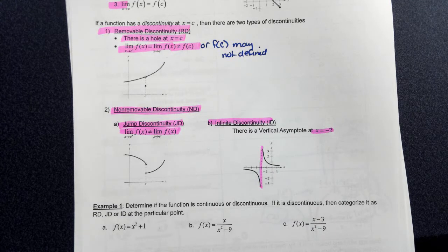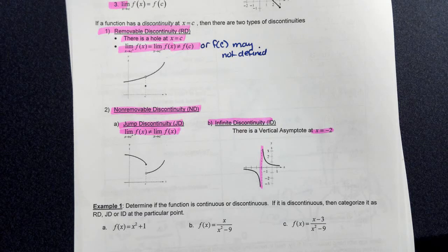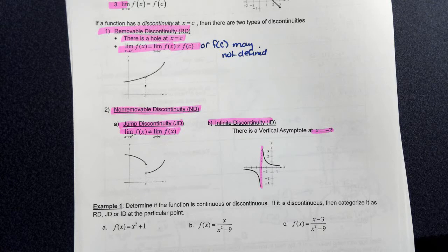Infinite discontinuity is when you have a vertical asymptote at that particular value. Both jump and infinite are categories of non-removable discontinuity — but sometimes they'll just ask you if it's removable or non-removable. If it is a jump, you would simply say non-removable. Non-removable has two subcategories.